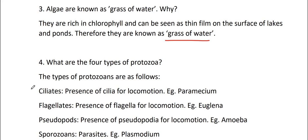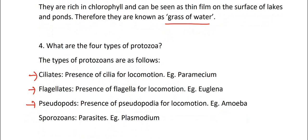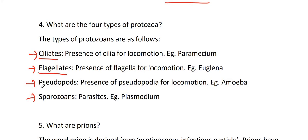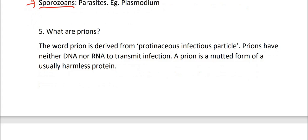Fourth one, what are the four types of protozoans? The types of protozoans are non-litypical. So first one ciliates, apna presence of cilia for locomotion, example paramecium. Second type flagellates. Third one pseudopods. And fourth type sporozoans.